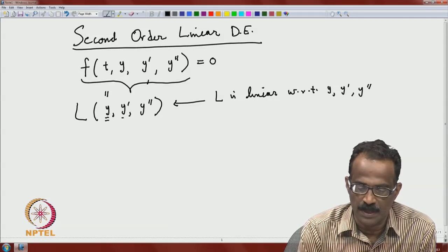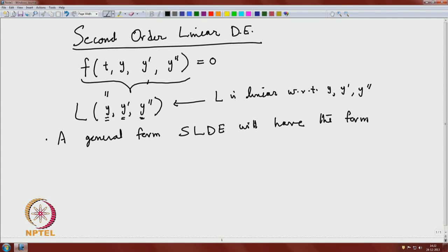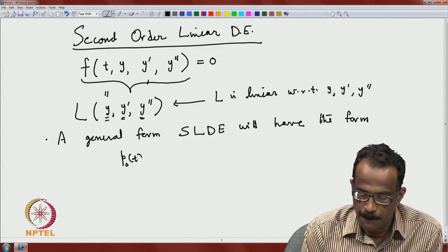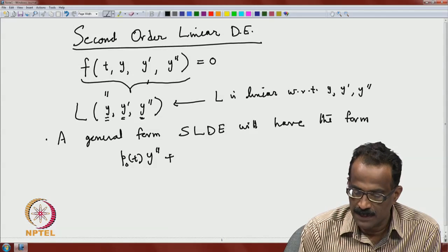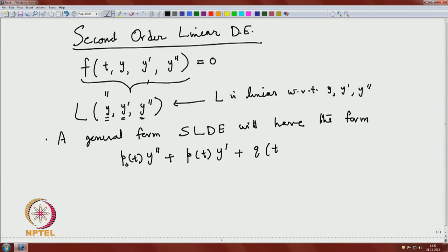We have linearity with respect to y, y prime, and y double prime. From linear algebra, the general form of a second order linear differential equation is: p₀(t) y double prime plus p(t) y prime plus q(t) y equals r(t). This is the most general form of the second order linear equation.